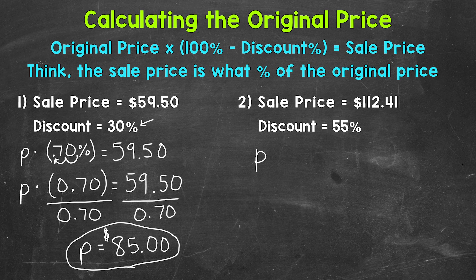Let's find out what the original price was. So we'll set up our equation. So we have the original price times, well, 100% minus 55% gives us 45%. So we are paying 45% of the original price. And that gives us our sale price of $112.41.